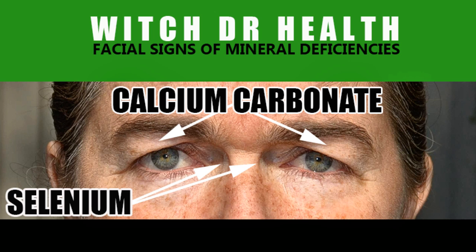To summarize the two signs of mineral or tissue salt deficiencies for today: calcium carbonate is the hanging skin above the upper eyelid that will typically just cover the eyelids; and selenium presents as sharp or rounded indents at the inside corners of the eyes, against the side of the bridge of the nose. It does not have to be as prominent as this extreme case, but these are the two signs to look out for. That's all for today, folks — see you in the next video.